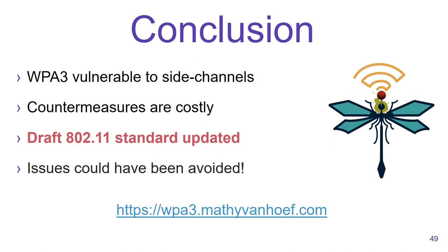I conclude my talk. We have shown that WPA3 is vulnerable to side channels. The countermeasures against it are costly and because of this, the IEEE has now updated the draft standard. Perhaps the most important takeaway message is that these issues could have been avoided if the designers would have followed the advice of the IETF and CFRG and used an alternative hash-to-curve algorithm. Thank you for your attention.